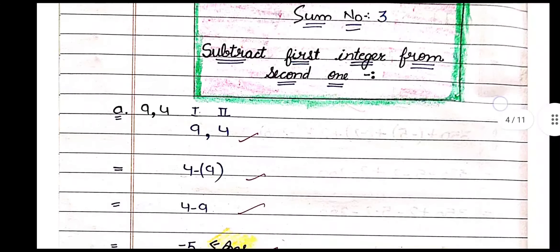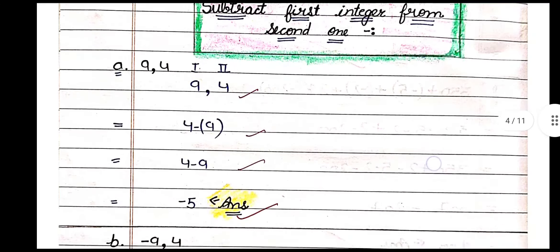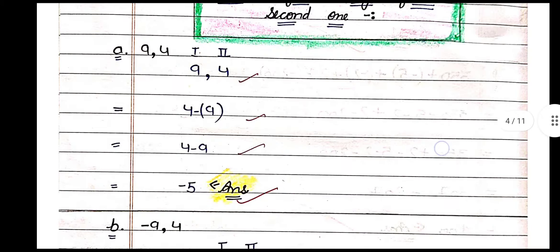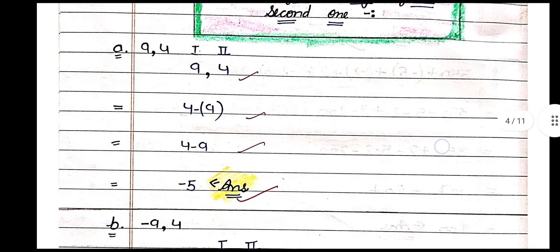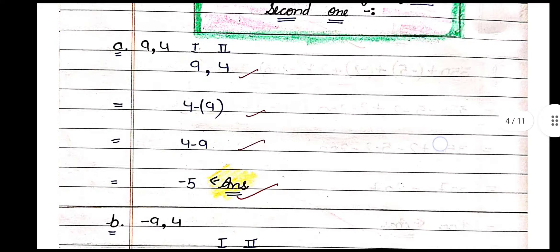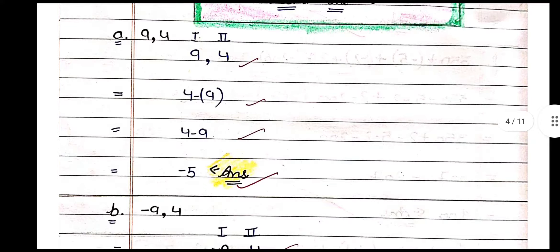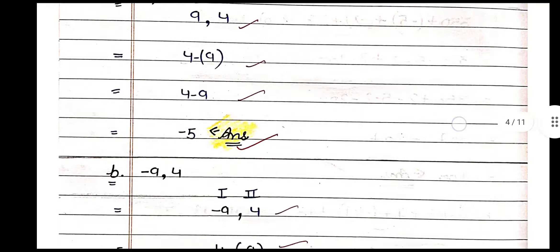Subtract the first integer from the second integer. The first integer is 9 and the second is 4. We take the number after 'from' first: 4 minus 9. Since 9 is bigger than 4, we subtract 4 from 9 and the answer is negative. So the answer is minus 5.